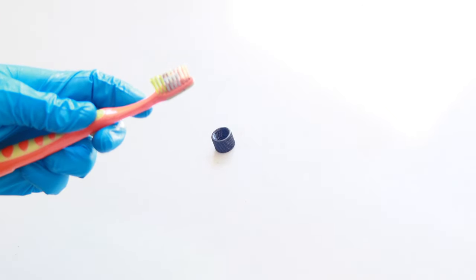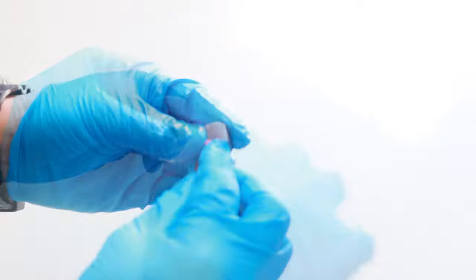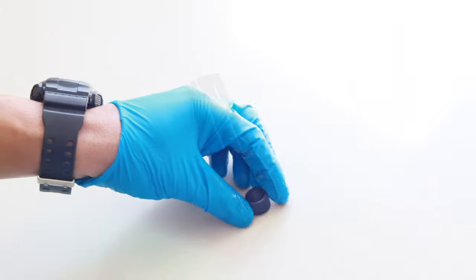Now let's clean the thread protector. Add CLP to your nylon brush and scrub it inside and out. And once you dry it off with a clean rag, go ahead and re-lubricate the inside. You don't want to leave the threads totally dry because it may be hard to remove the next time you clean it.